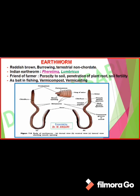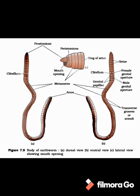In this video lecture we are going to study about earthworm. Earthworm is reddish brown in color, burrowing, terrestrial, non-chordate. The common Indian earthworms are Pheretima and Lumbricus, with complete names Pheretima posthuma and Lumbricus terrestris. Earthworm is regarded as a friend of the farmer because it gives porosity to soil, helps in penetration of plant roots, and increases the fertility of the soil by vermicompost or vermicasting process. It is also used as bait in fishing. The earthworm body is externally covered by a thick cuticle.